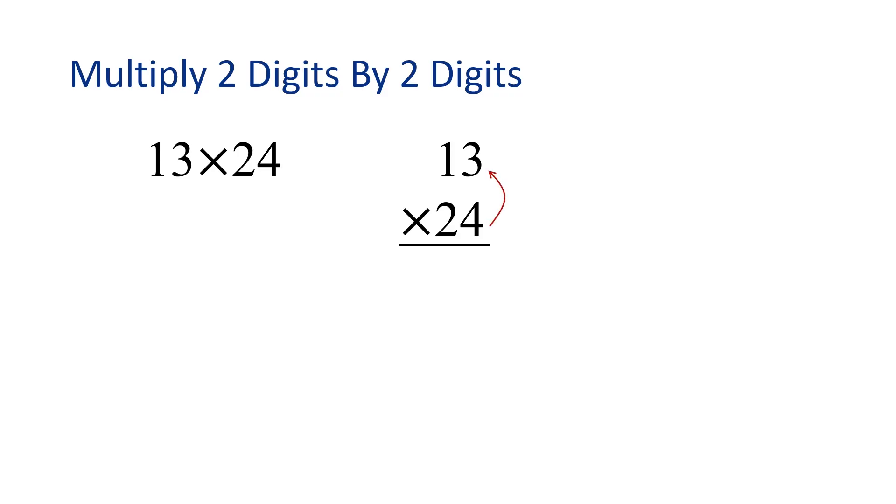4 times 3 is 12. However, when we multiply, we can only write one digit below in each column, so this means we need to carry the 1 to the next place value. Now, we multiply 4 times 1, and then we add the 1 that we had carried. 4 times 1 is 4, plus 1 is 5. Great job! We're halfway done.